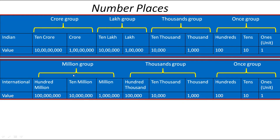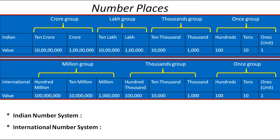Now I will explain giving commas in the Indian and International Number System with an example. Let's take a number. As there is no comma, it's difficult to read, isn't it? When you give commas in the Indian Number System, you have to follow the groups. You have to count 3 digits from the right and then give a comma. After this, give commas after every 2 digits.